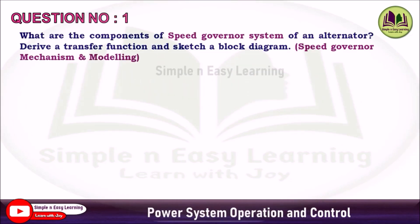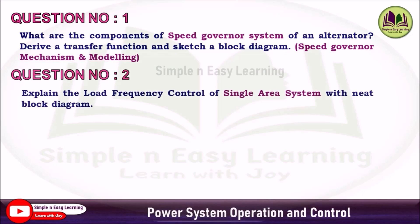Unit 2: Real Power Frequency Control — Question 1 (Priority 1): What are all the components of a speed governor system of an alternator? Derive the transfer function and sketch a block diagram. The complete speed governor mechanism and modeling is important — you can find this question in almost all question papers, so it is a very, very important question.